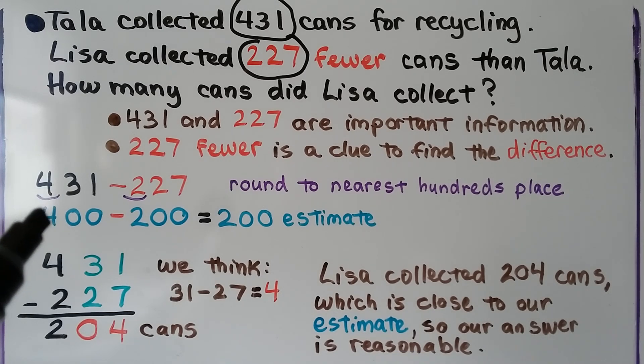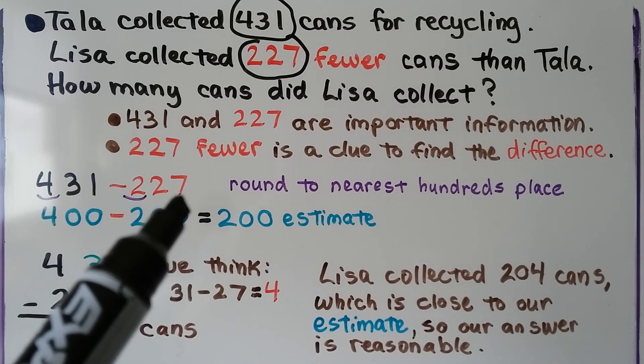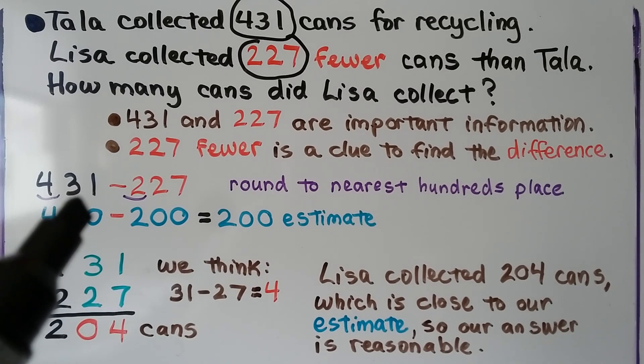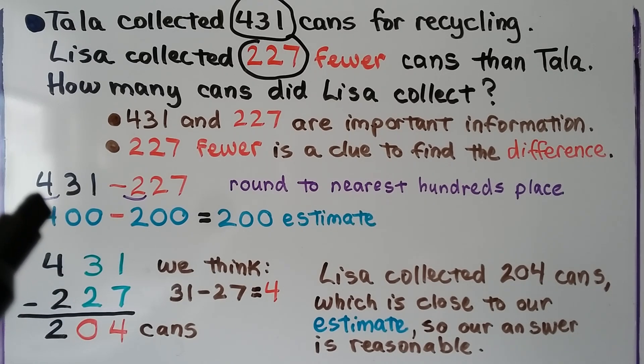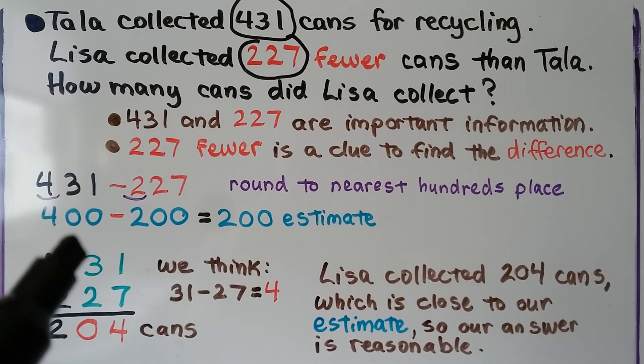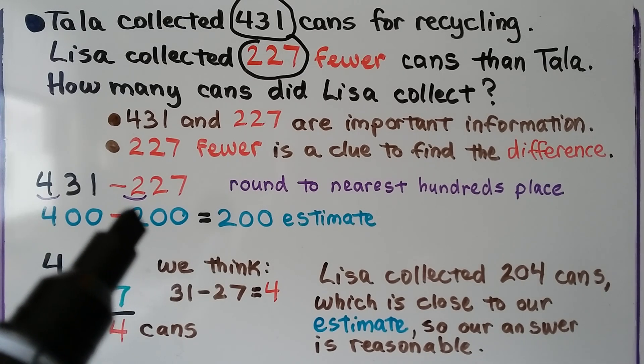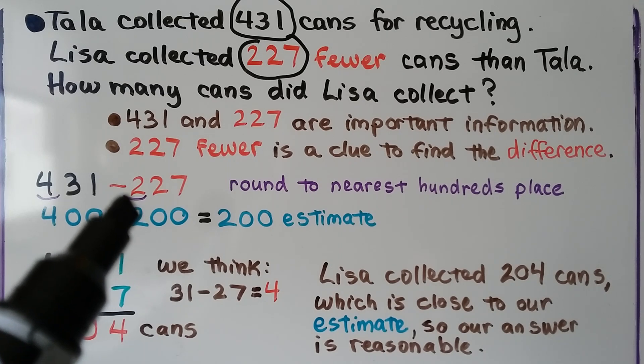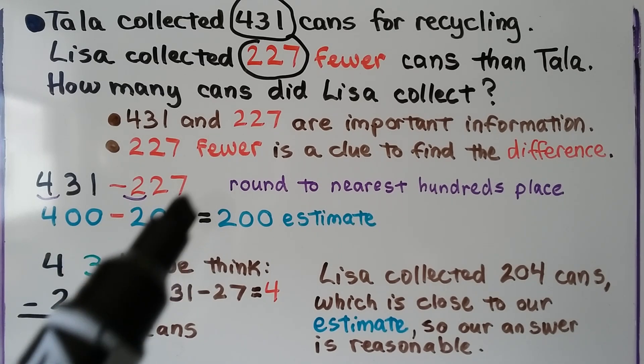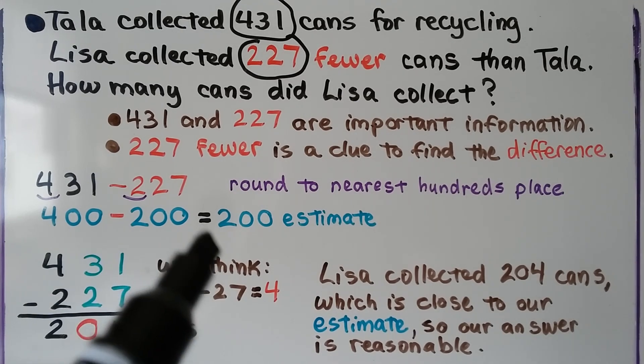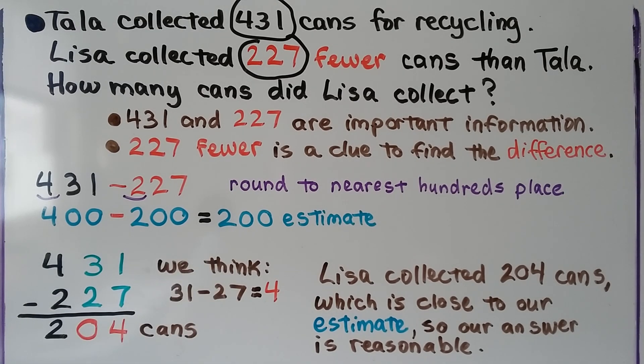We have 431 minus 227. We can round to the nearest hundreds place. The 3 tells the 4 to stay the same. Then everything, the 3 and the 1, everything to the right becomes 0, so that rounds to 400 to the nearest hundreds place. 227, this 2 tells the 2 in the hundreds place to stay the same, and then it and the 7 become zeros, so that rounds to 200. And 400 minus 200 equals 200 for our estimate.